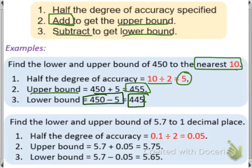Now in the case of the second question: find the lower and upper bound of 5.7 to the first decimal place. If it is first decimal place, we take it as 0.1. So 0.1 and then we halve it, so it becomes 0.1 divided by 2, which equals 0.05.